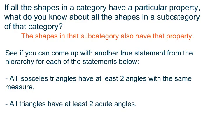So if all the shapes in a category have a particular property, what do you know about all the shapes in a subcategory of that category? Well, all the shapes in that subcategory would also have to have that property. That's what we were just proving to ourselves with the triangles in the hierarchy.